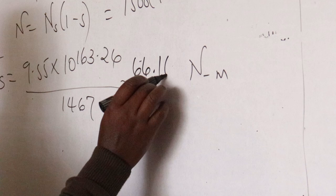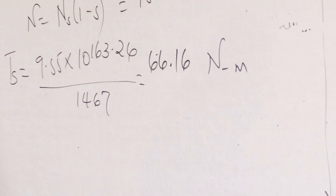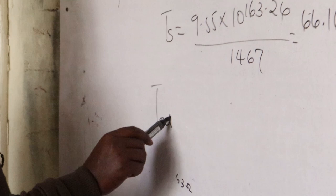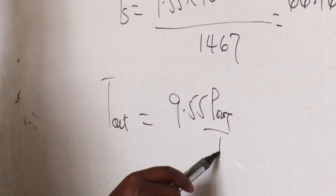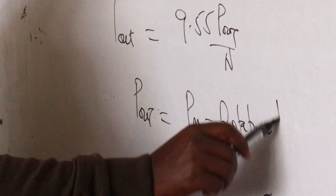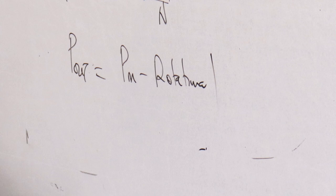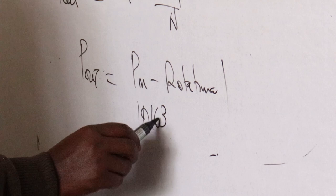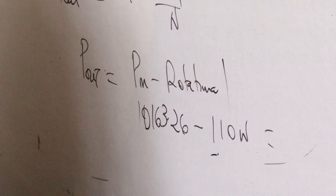The next is output torque. T output equals 9.55 times Pout over N. We need to get Pout first: Pout equals Pm minus rotational losses, which is 10163.26 minus 110. Then go back and put this value into the output torque formula.